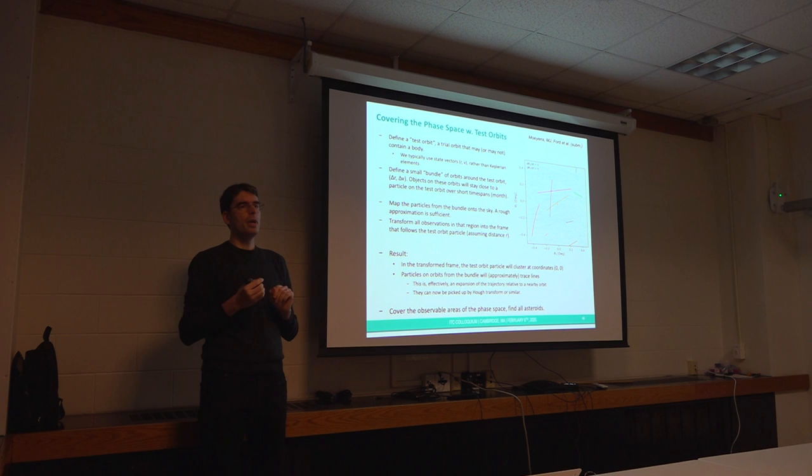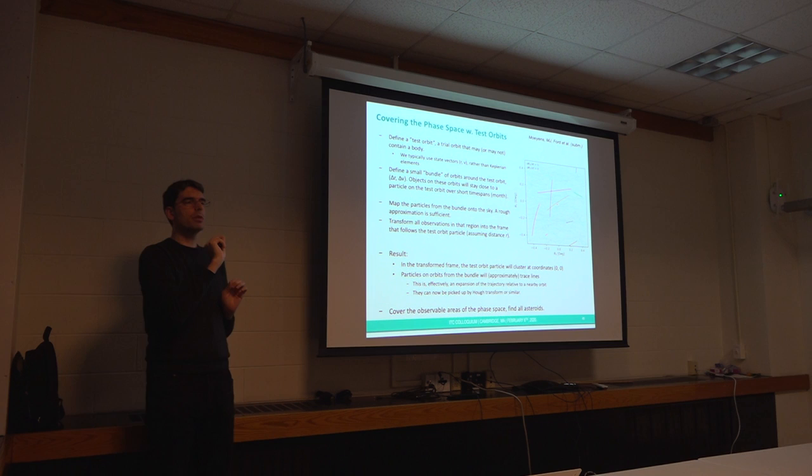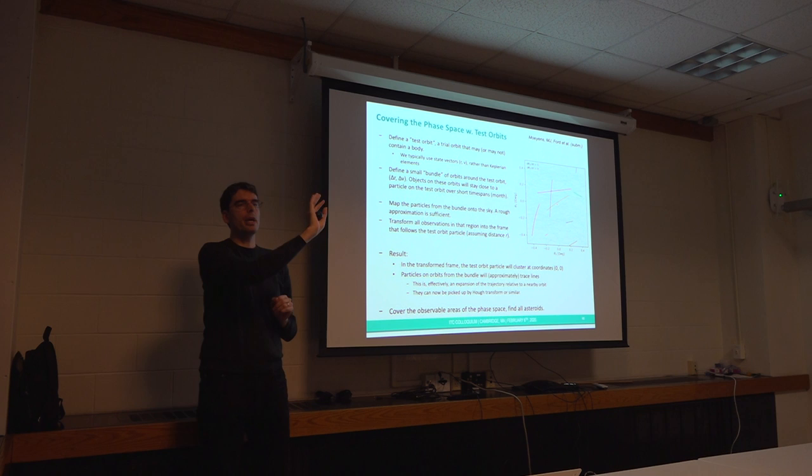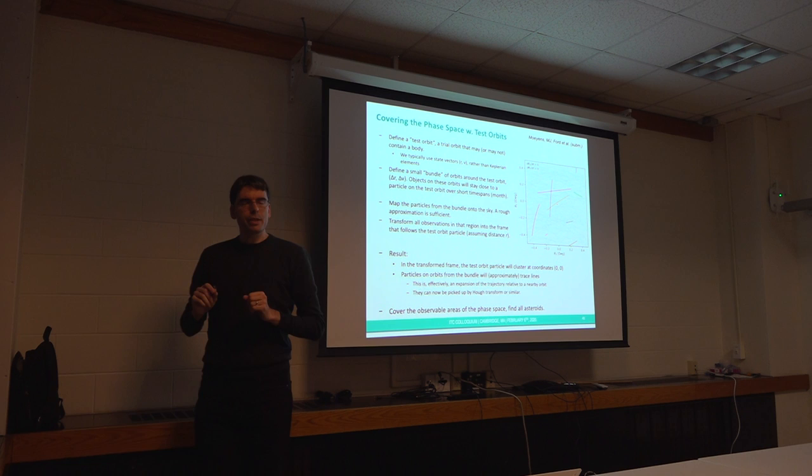So if we happen to have the observations that are right on that orbit, if I guessed that there's an asteroid on, if I guessed the right orbit for an asteroid, all the observations of that asteroid will cluster essentially to the origin point in that co-rotating frame.